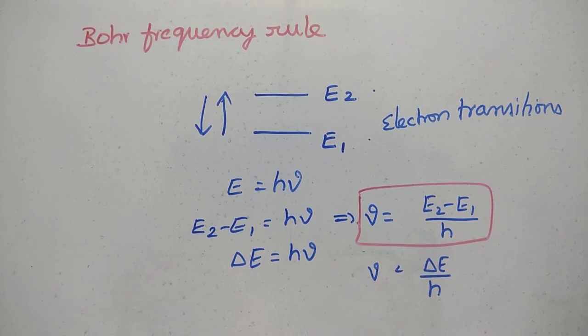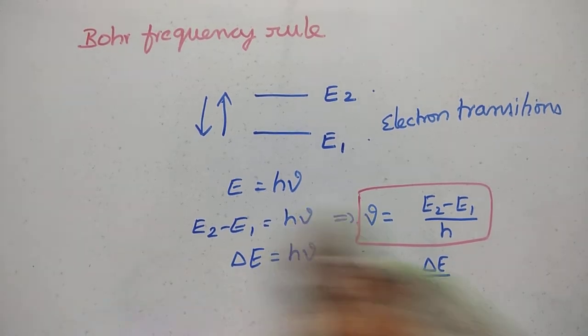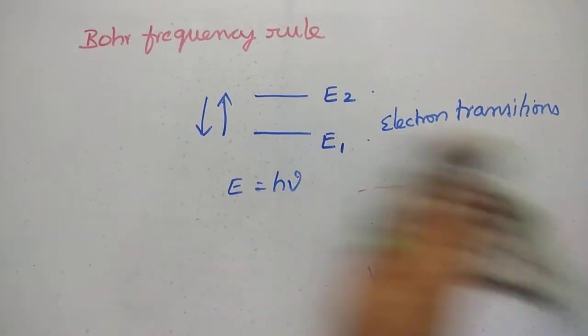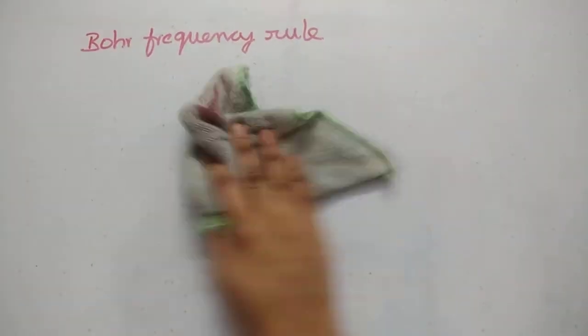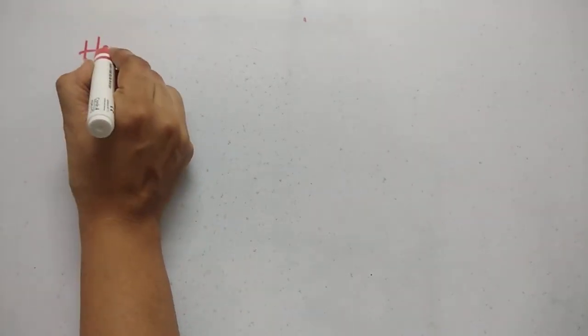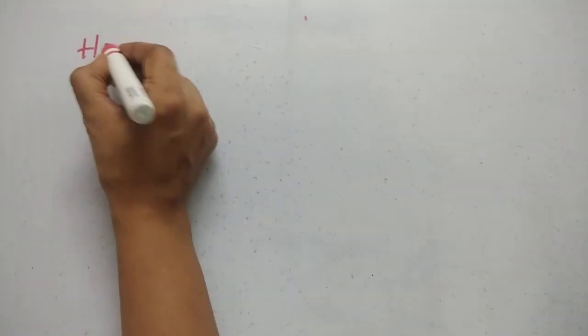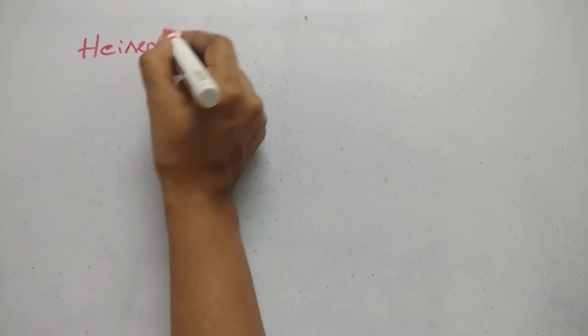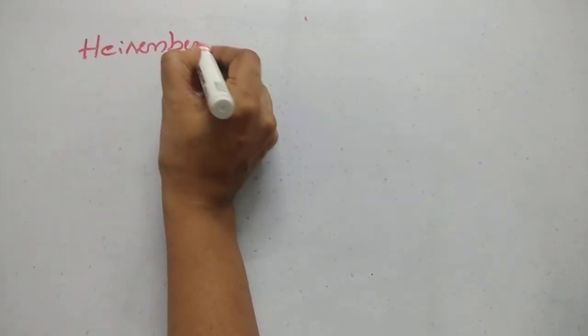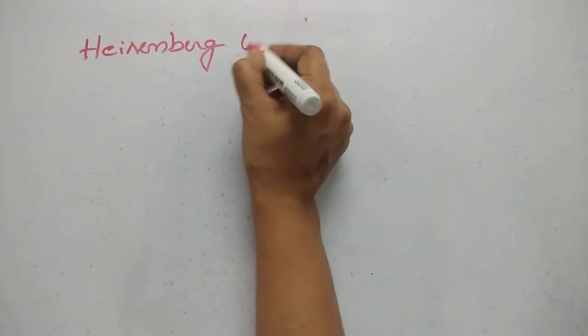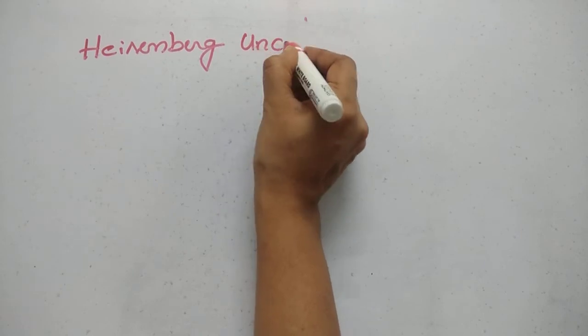So the next one is Heisenberg Uncertainty Principle.